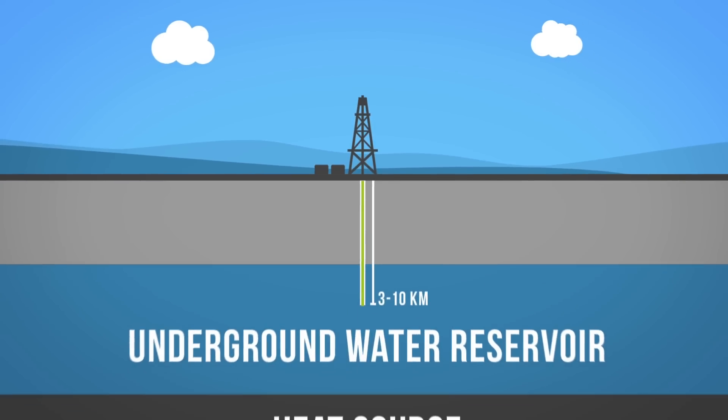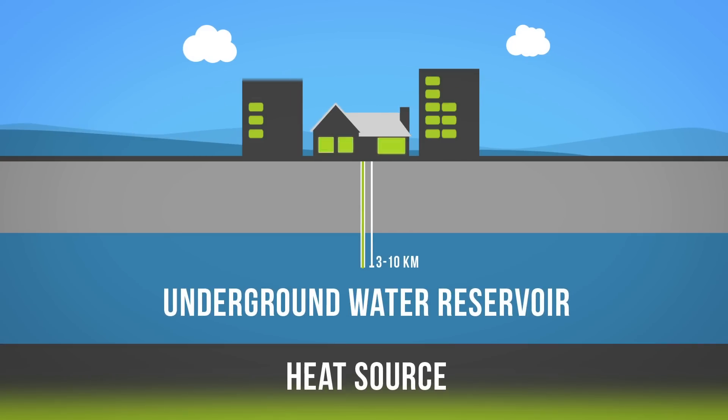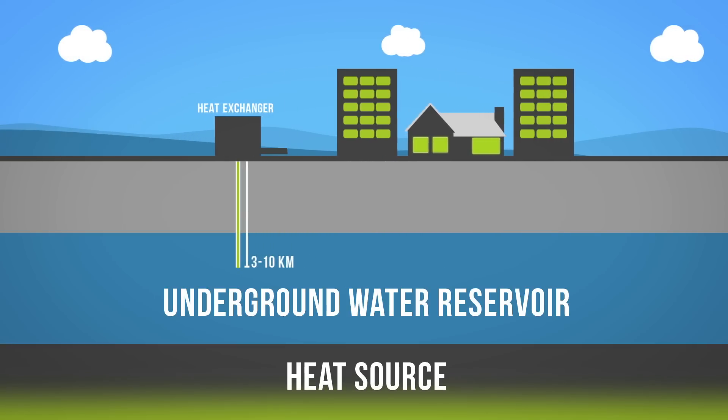Hot water from the Earth may be directly extracted to heat homes and buildings. This is done either by directly circulating the hot water through buildings, or by pumping it through a heat exchanger that transfers the heat to the building.